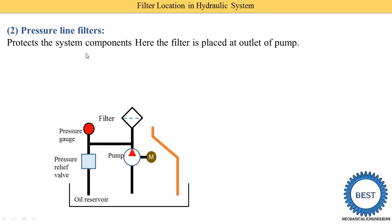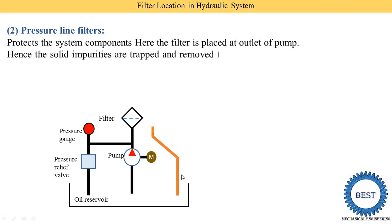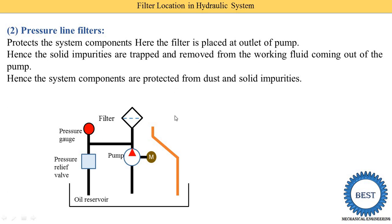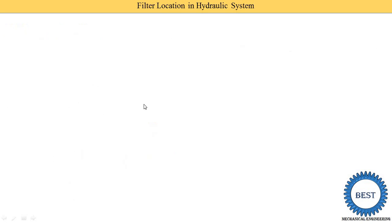The main function of the pressure line filter is to protect the system components. Since the filter is placed at the outlet of the pump, it does not protect the pump itself — impurities can still reach the pump and damage it over time. Solid impurities are trapped and removed from the working fluid coming out of the pump, so all other components connected to the outlet are free from dust and solid impurities.